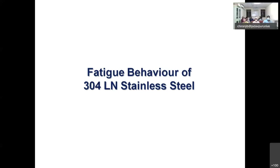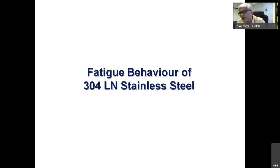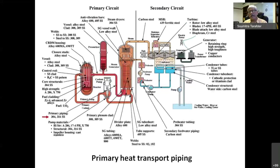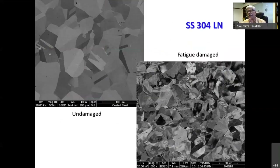Moving to 304LN stainless steel — work carried out by Dr. Reema Dey, a research associate with us. The 304LN stainless steel is used as the primary heat transport piping material in a nuclear power plant. Comparing the microstructure of undamaged 304LN stainless steel with a fatigue-damaged one, many features are revealed indicating significant damage in the microstructure — but the question is how to quantify that damage.